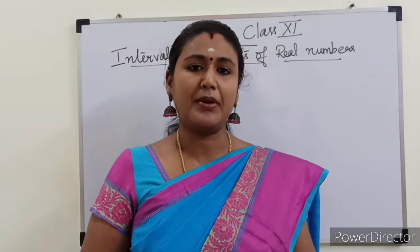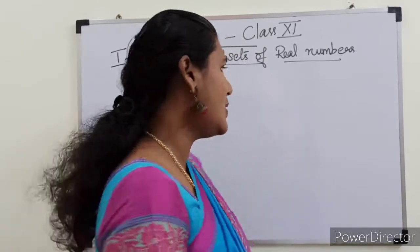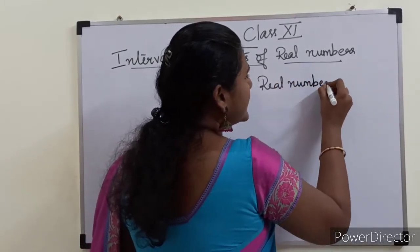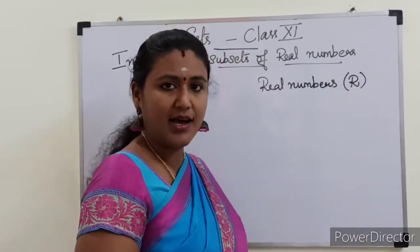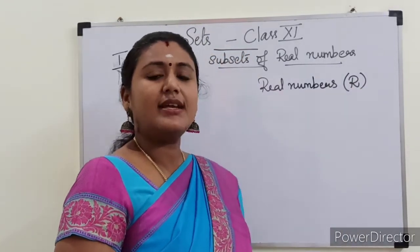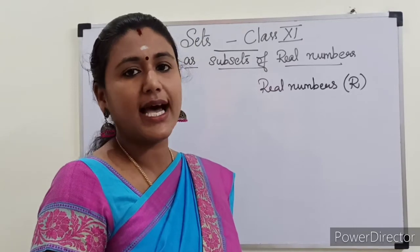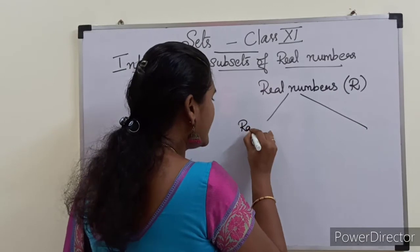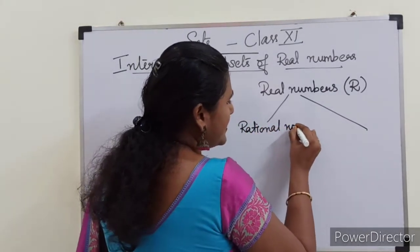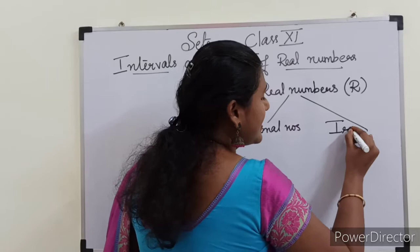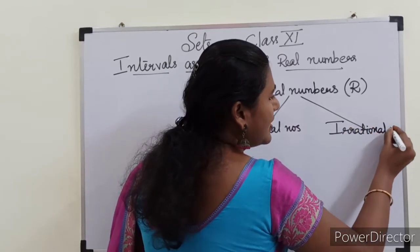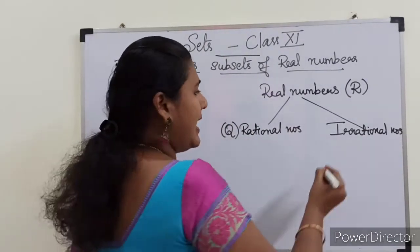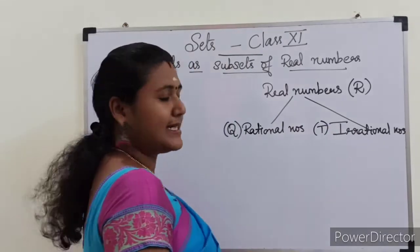Before going into the topic, first we will see what real numbers are. Real numbers we usually denote by the letter R. The real number collection is a collection of rational numbers and irrational numbers. We denote rational numbers by the letter Q and irrational numbers by the letter T.